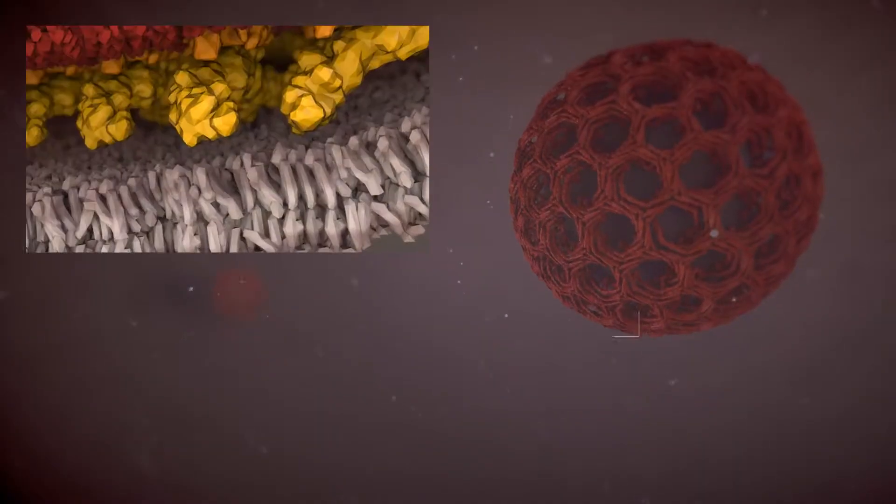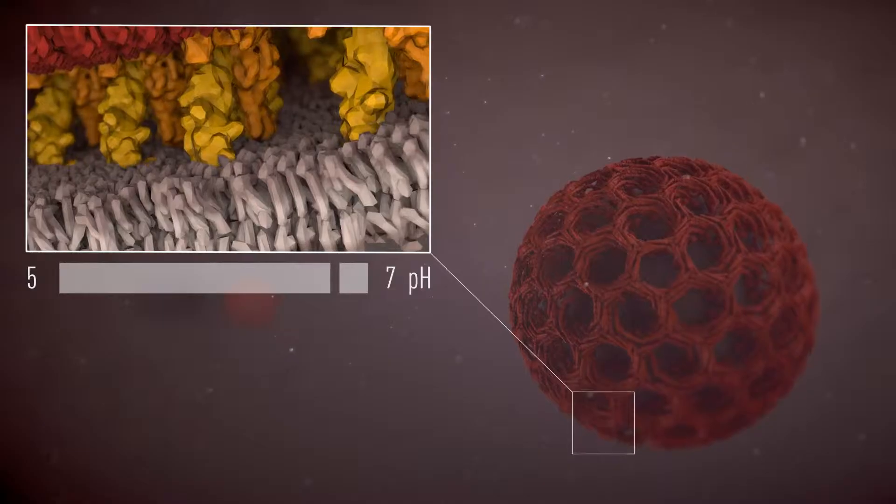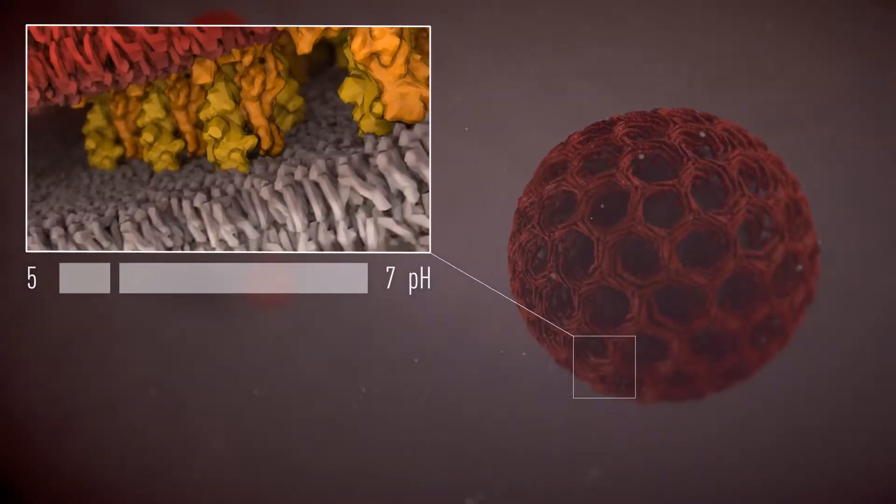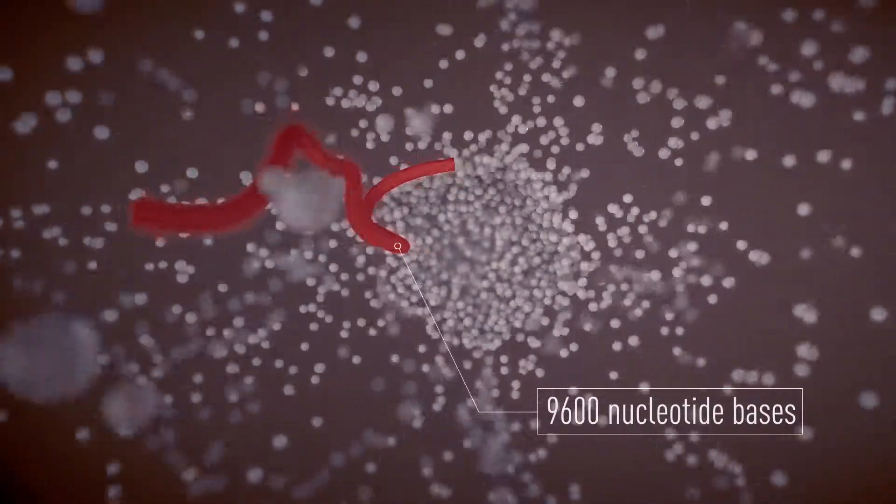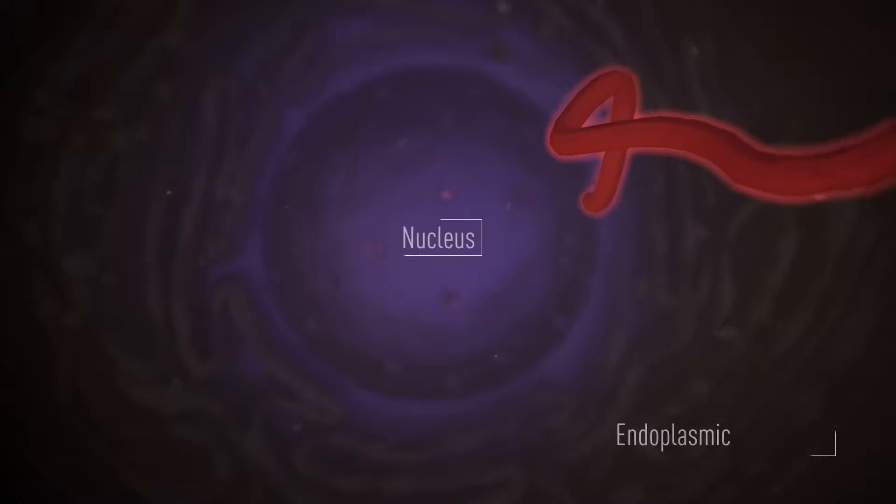The low endosomal pH causes a conformational change in the viral E-proteins, resulting in HCV endosome fusion. This event permits the virus to escape, uncoat, and release its genome into the cytosol for translation and replication.